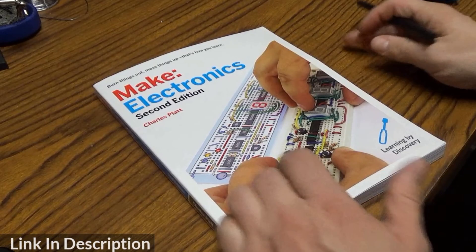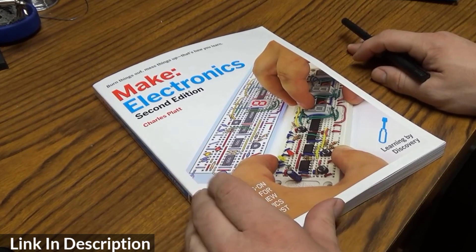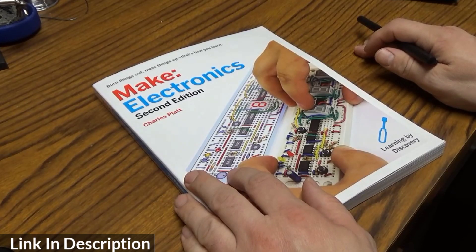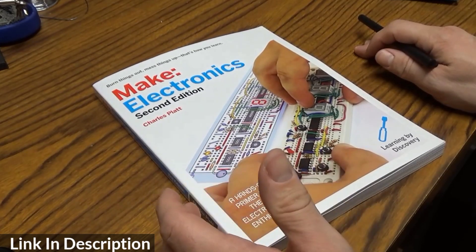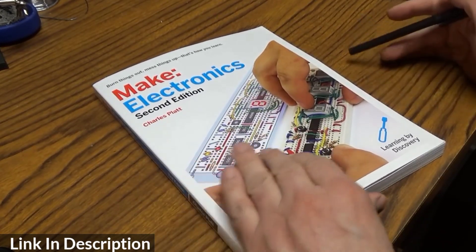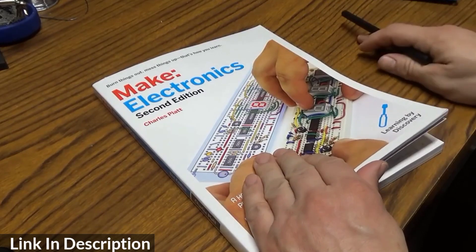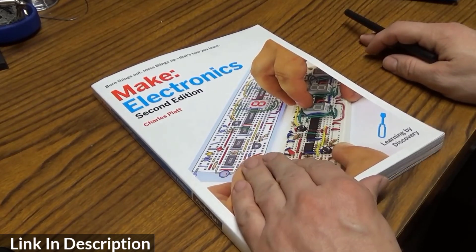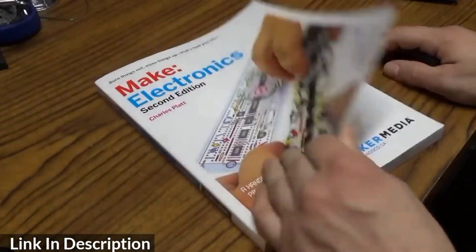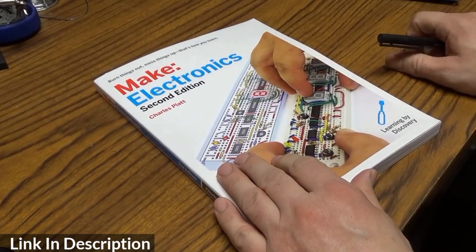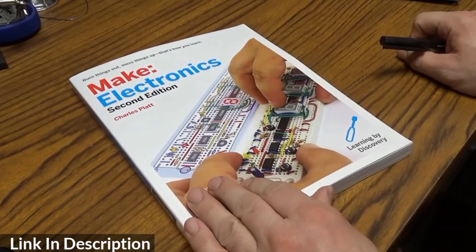This book is from Make Magazine Publishing and it's written by Charles Platt. It's a second edition, and from what I've read it is kind of a rewrite from the first edition. They've improved a lot of the illustrations as well as cleaned up some of the examples.